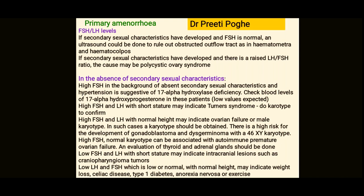When LH and FSH are both high with short stature, these patients are generally Turner syndrome — do karyotyping and you may find 45 XO. Patients with high FSH and LH but normal height may indicate ovarian failure or a male karyotype — karyotyping should be obtained. There is a high risk for gonadoblastoma and dysgerminoma with an XY karyotype.